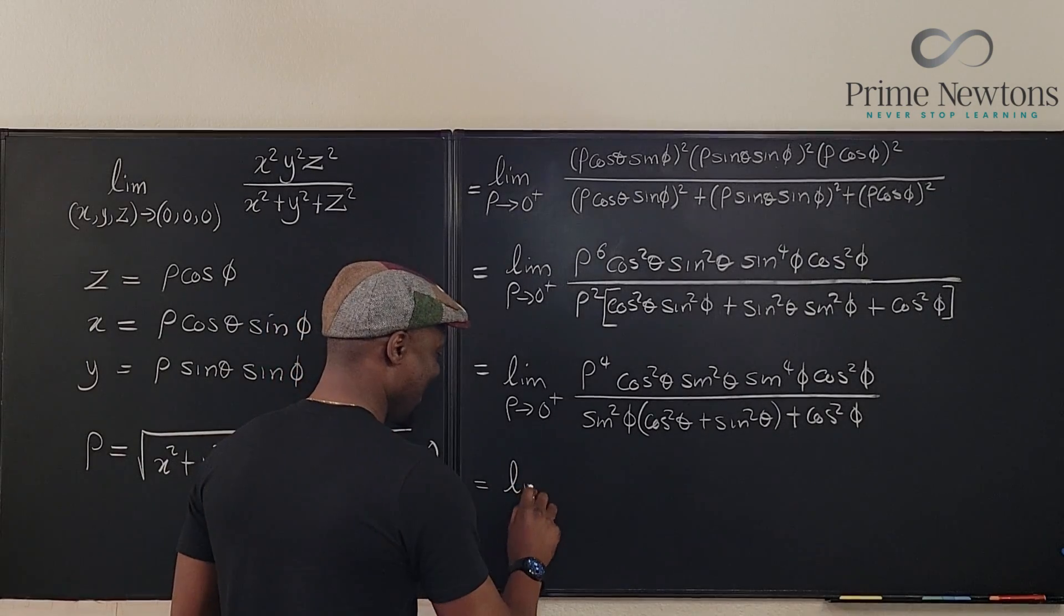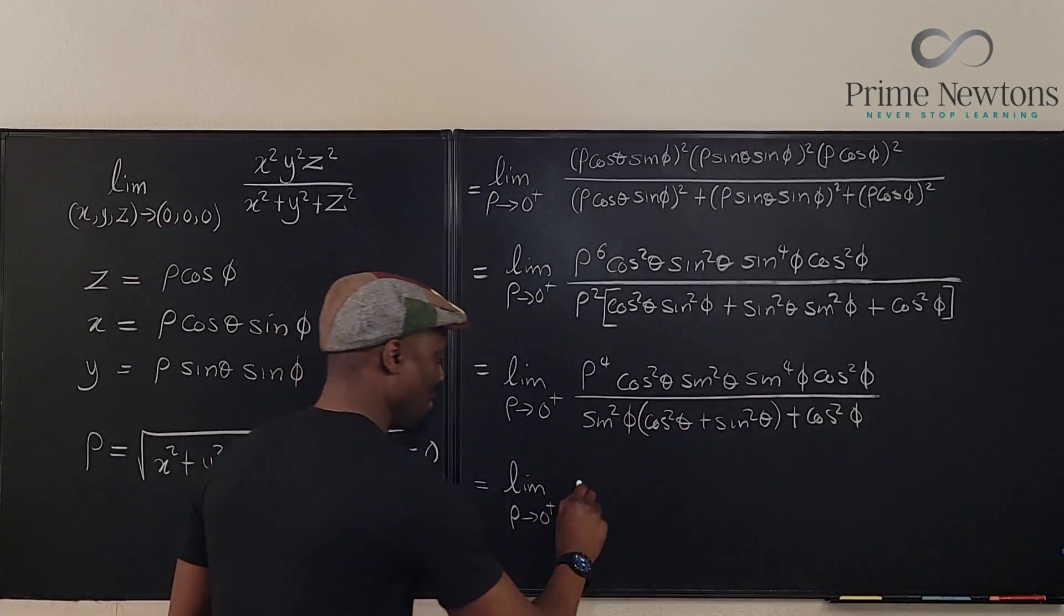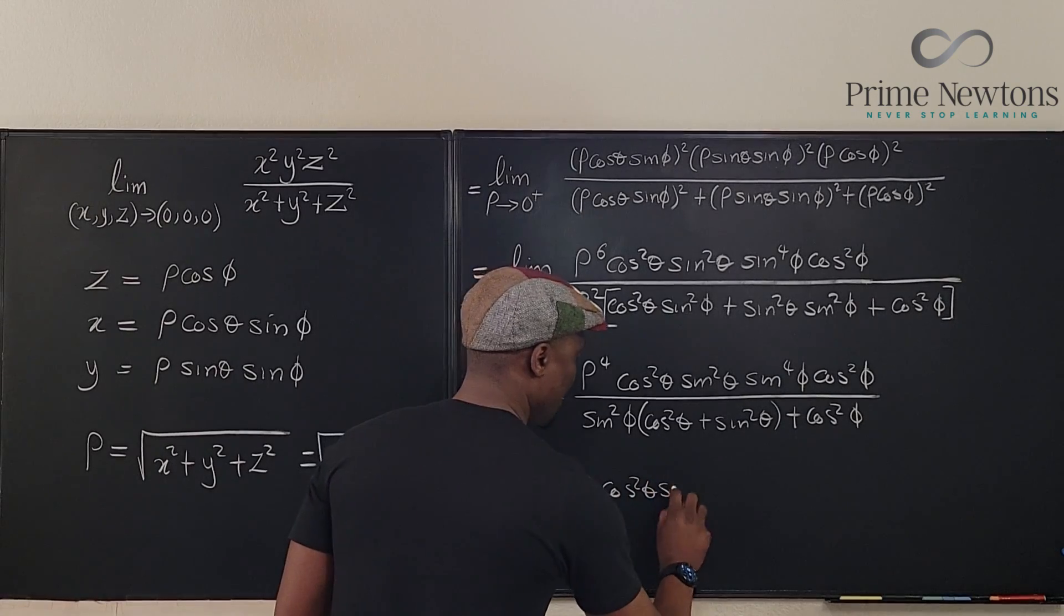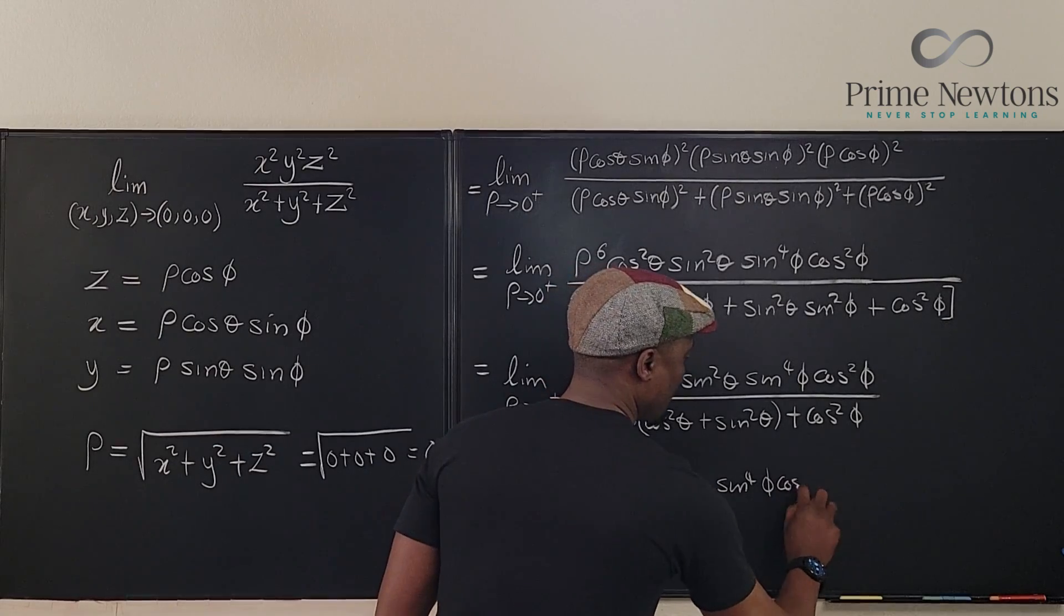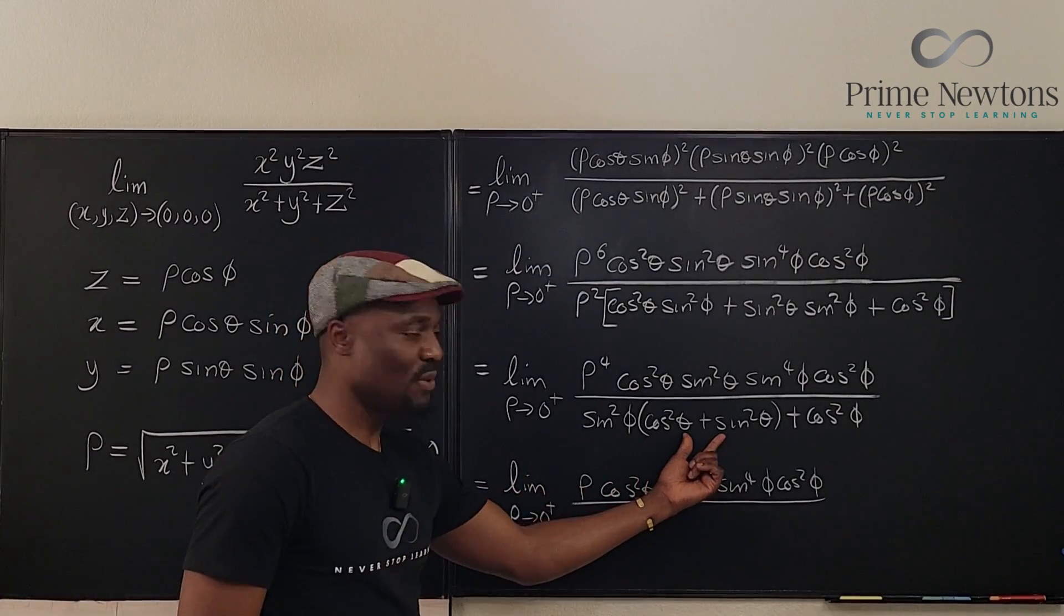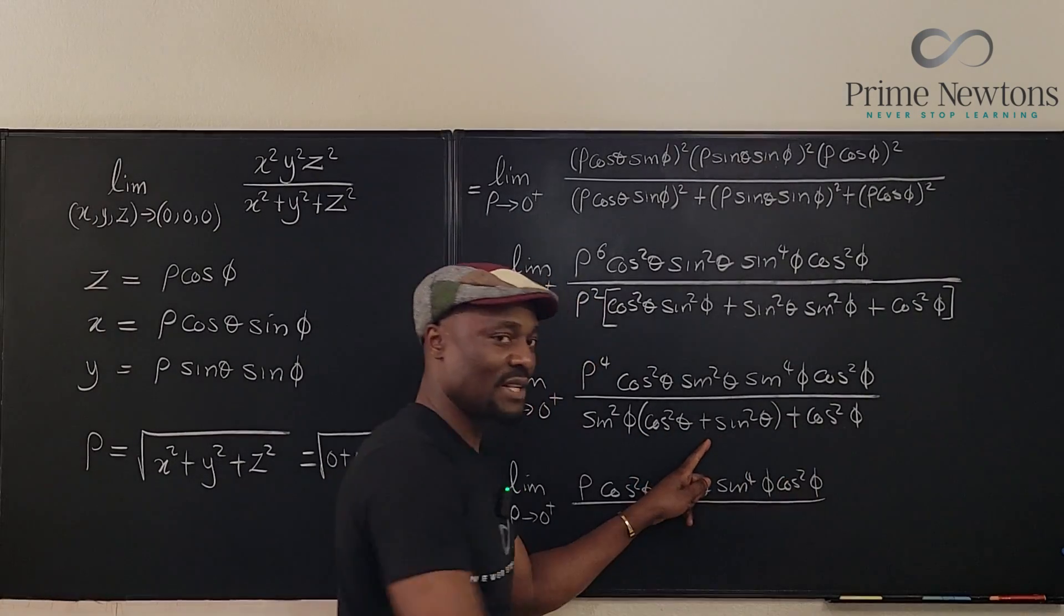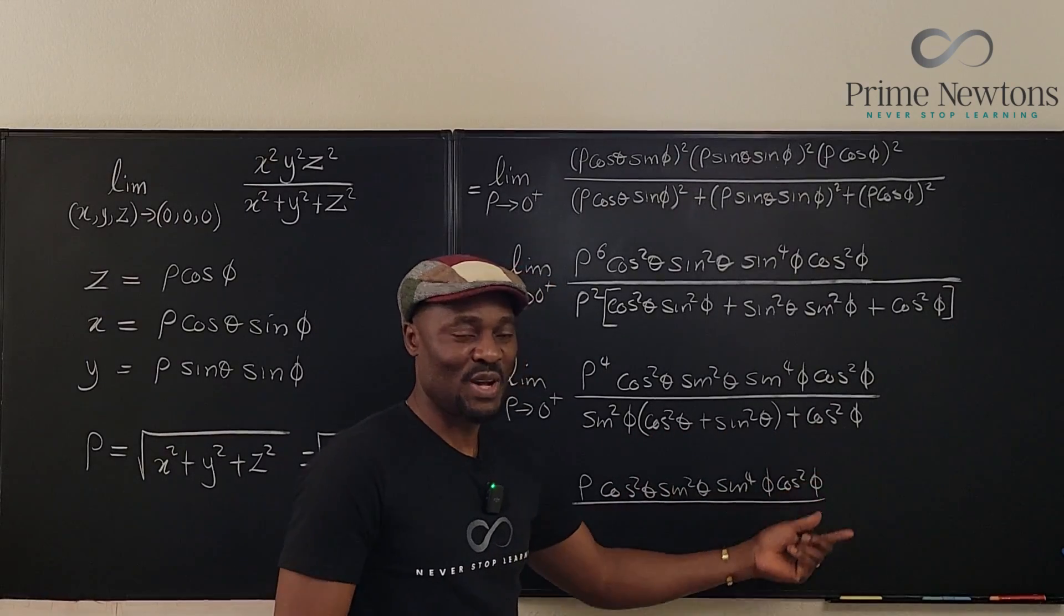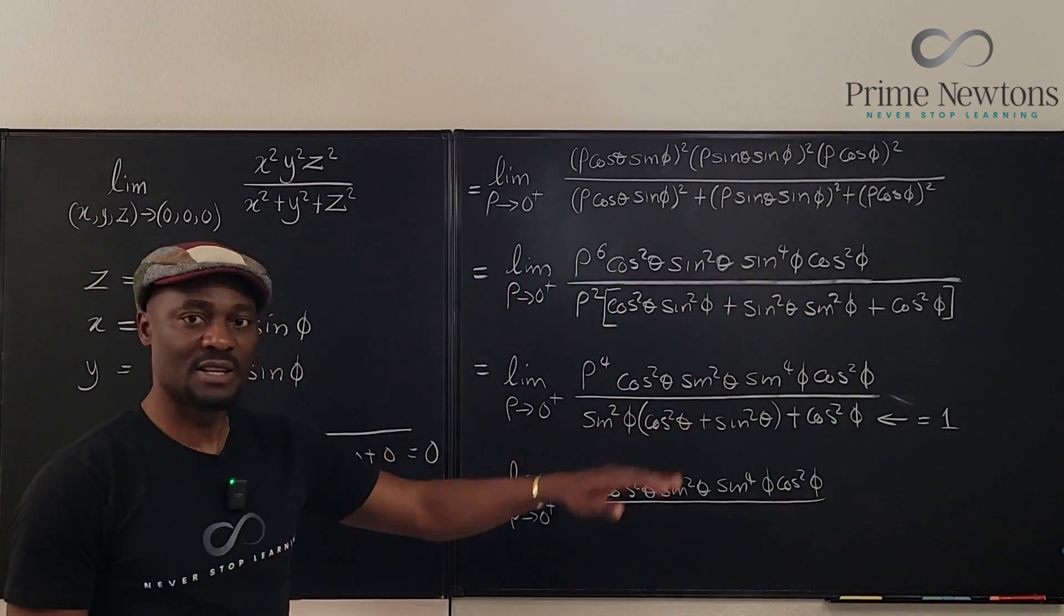And this is going to be the limit as rho approaches zero from the right. And now, if you write this out, this is going to be rho to the fourth. Nothing changes here. You still have cosine squared theta, sine squared theta, sine to the fourth of phi, cosine squared phi. And what do you have here? This is going to be one, right? So this is sine squared phi times one plus cosine squared phi. Well, we know that this is going to be sine squared phi plus cosine squared phi, which is just one. This equals one. Everything in the denominator.